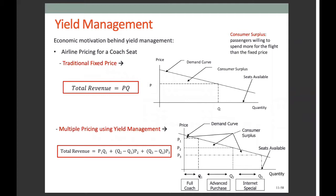That means internet specials are an opportunity to sell excess seats at a discount. For yield management, the total revenue is the sum of price times quantity for passengers in each segment: P1 times Q1, plus P2 times (Q2 minus Q1), plus P3 times (Q3 minus Q2). The total revenue is larger than the revenue obtained under a traditional fixed-price policy, and the consumer surplus is lower. This also explains why passengers find fewer discounted seats in today's market.